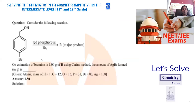The question asks for the estimation of bromine in one gram of R using the Carius method. The Carius method is used for the estimation of halogens using the reagent silver nitrate. Whenever silver nitrate is added, it drags the halides present, forming silver bromide.